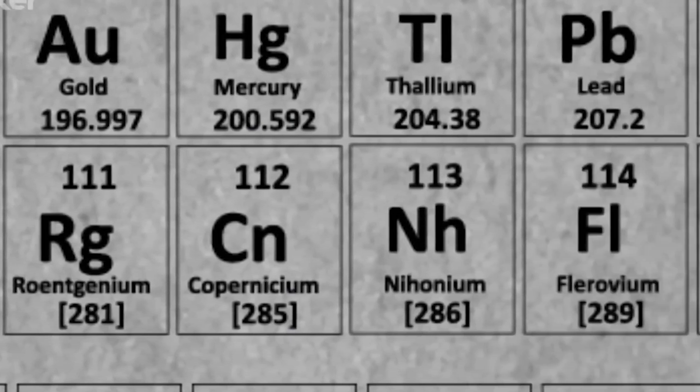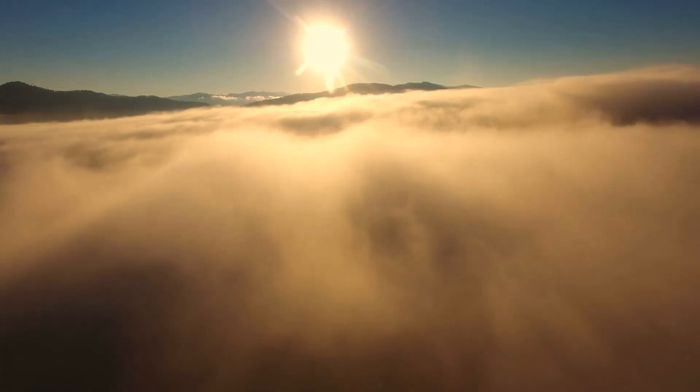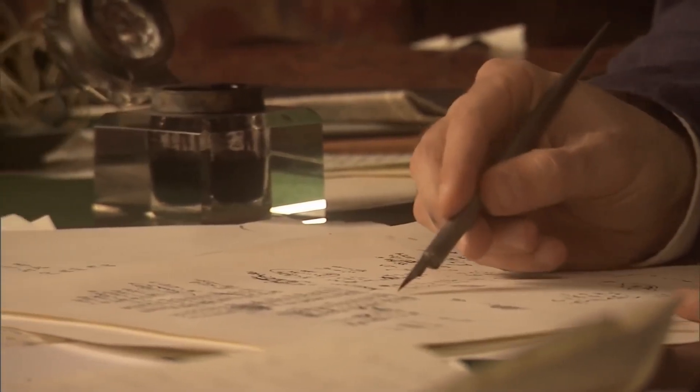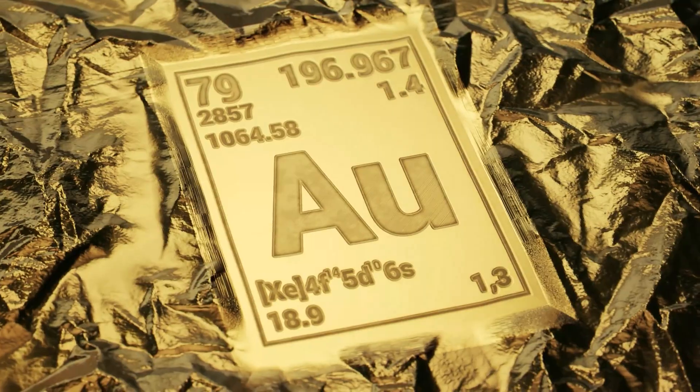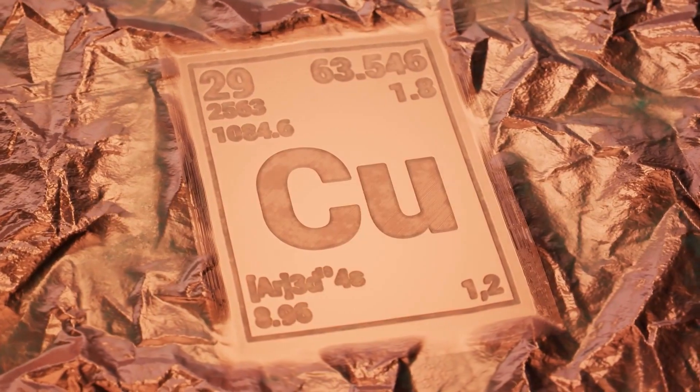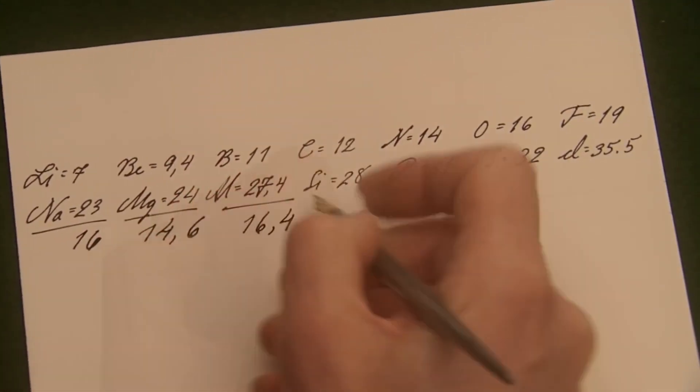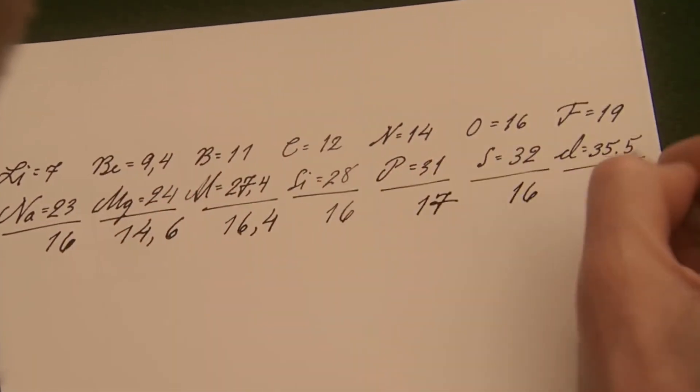The periodic table serves as a comprehensive guide to the elements that constitute our universe, from the air we breathe to the water we drink. In earlier times, our knowledge of these elements was limited, with only a few common ones such as gold, silver, and copper known to us. The true nature of elements and their relationships remained a mystery. It was in the early 1800s that the foundation of modern chemistry began to take shape.